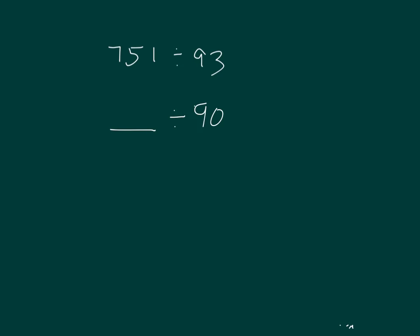And what would we go to here? Start counting: 90, 180, 270, 360, 450, 540, 630, 720. There we go. It would be 810 next, so 720 is closer.